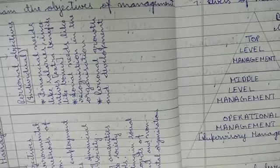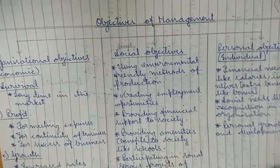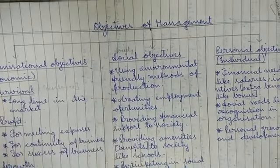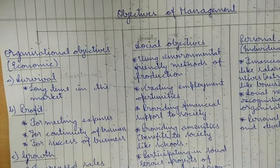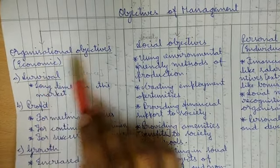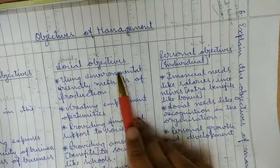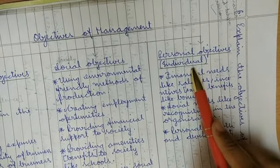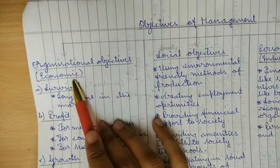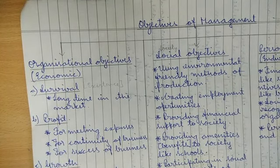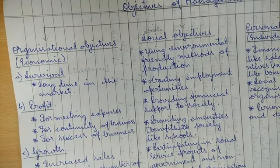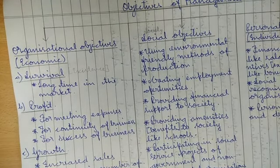Next: explain the objectives of management — this is a four-mark question. Don't confuse characteristics or features of management with objectives of management. The objectives of management are: organizational or economic objectives, social objectives, and personal or individual objectives.